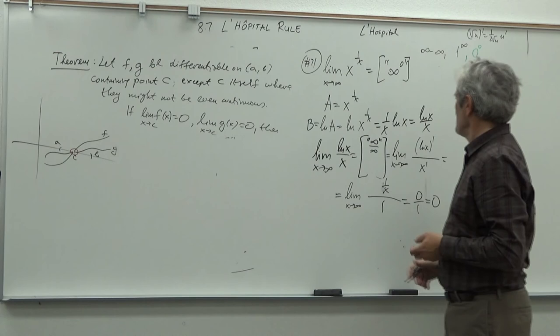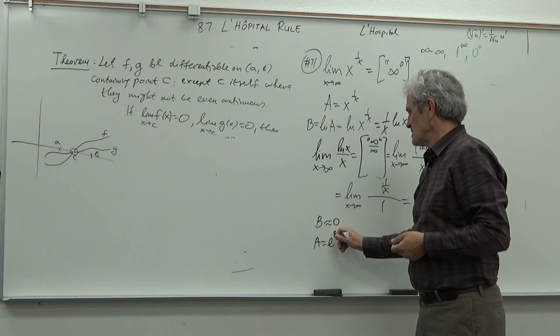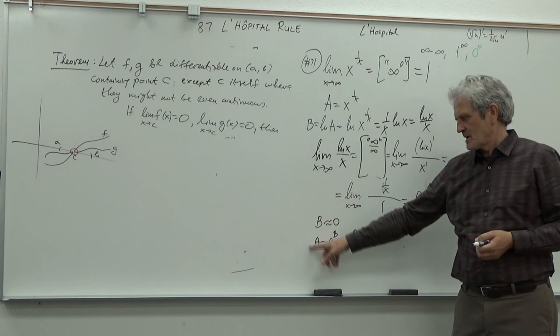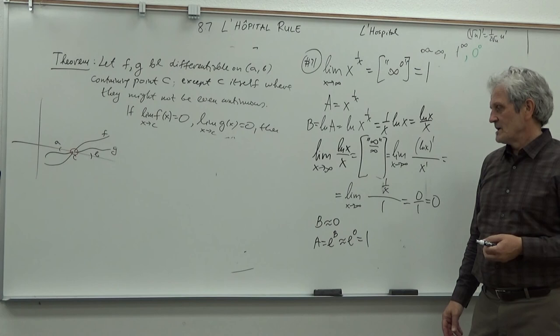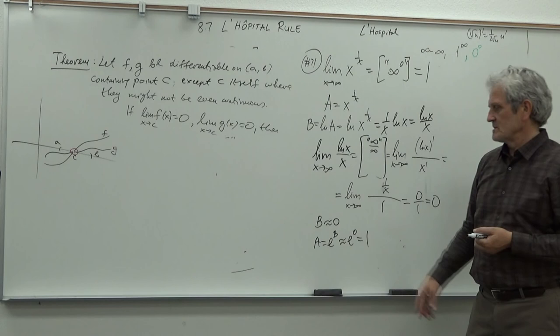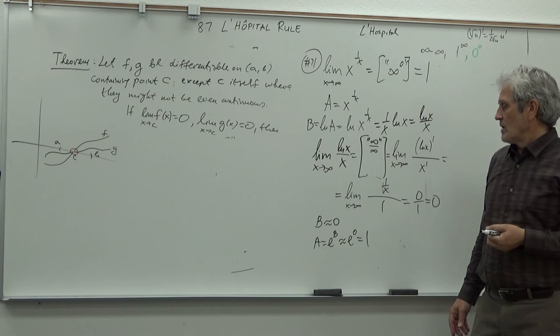So B = ln A → 0, which means A = e^B → e^0 = 1. The limit is 1. When we apply this type of reasoning, we are really using the continuity of the exponential function, which is everywhere continuous. So if B is close to 0, then e^B is close to e^0 = 1. If inputs are close, outputs are also close — that's basically what the existence of the limit means, and that's what we use here.